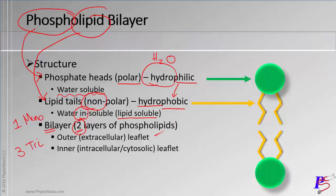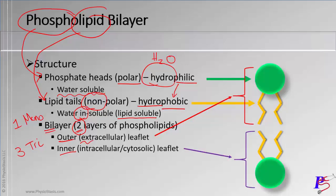Here's the second component to it. As you can see, we have an outer layer and we have an inner layer. Another way of saying the outer layer is the extracellular leaflet — leaflet also means layer. The inner we call the intracellular, and since it faces the cytosol, we call it the cytosolic leaflet.